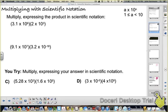When we multiply, you take your first numbers, 3.1 times 2. When you multiply that, you get 6.2.